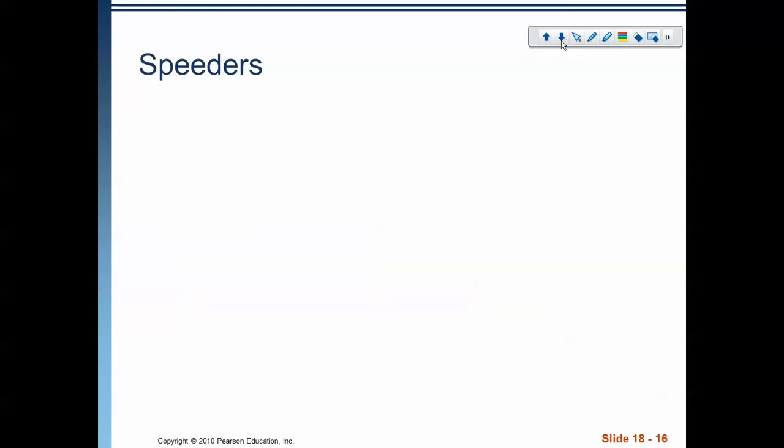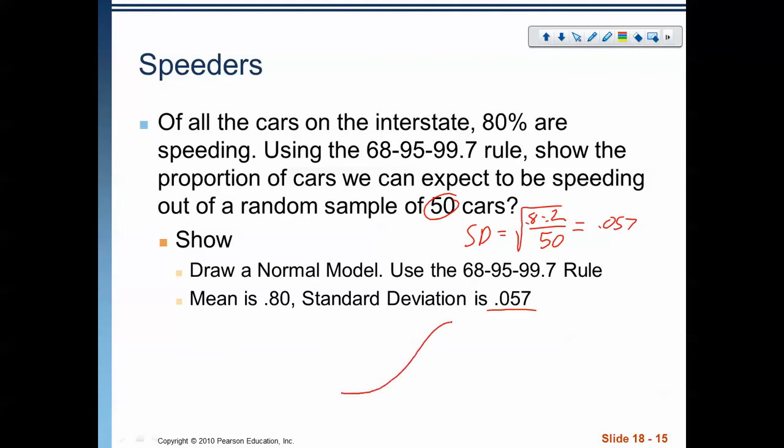So, our normal model is going to have a mean at 0.8, because that is the same as our sample proportion. And then, we're going to add 0.057 to get our standard deviations. So, that's 0.857. And we add it again, we get 0.914. And we add it again, we get 0.971. And then, we're going to go the opposite direction, this time subtracting 0.057. So, we get 0.743. And we subtract it again, and we get 0.686. And we subtract it again, and we get 0.629. So, there's our 68, 95, 99.7 rule.